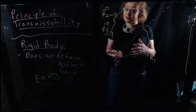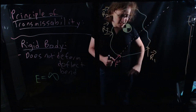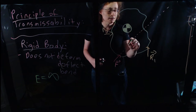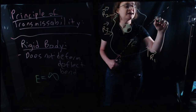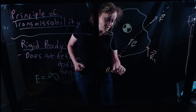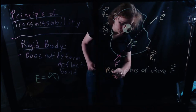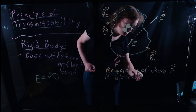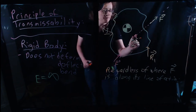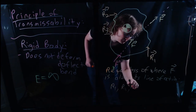So the principle of transmissibility states that I can move this force anywhere along its line of action without changing the rigid body behavior of the object that it's acting on. So if this thing is going to remain in static equilibrium, there have to be some restraining forces or reactions keeping it from moving. No matter where I place it along its line of action, my restraint forces will remain unchanged — R1, R2, and R3 are unchanged.